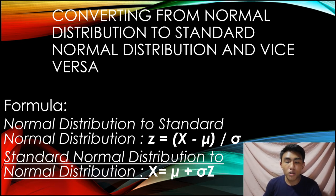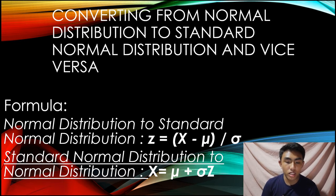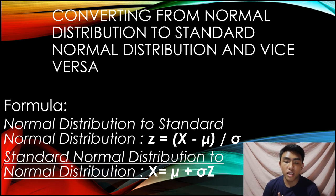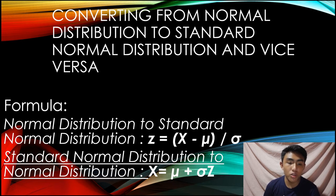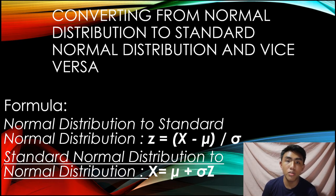So, the formula of conversion is random variable z equals x minus mu divided by the variance. Where x is the random variable, mu is the mean and variance is the standard deviation. This should be further discussed by my other group mates.